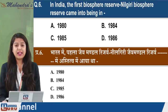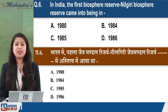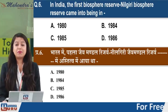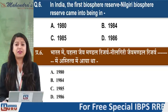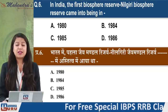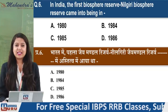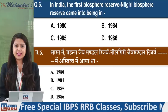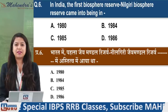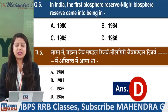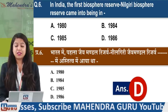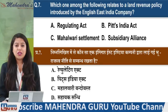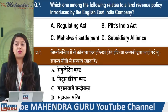Next question: In India, the first biosphere reserve - Nilgiri Biosphere Reserve - came into being in which year? Options: 1980, 1984, 1985, or 1986. The right answer is option D - 1986.